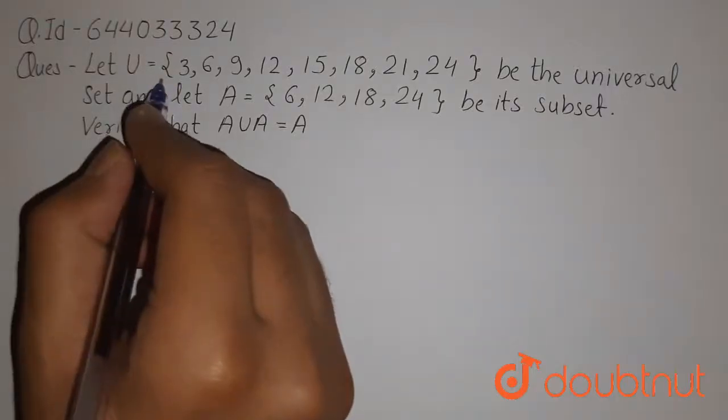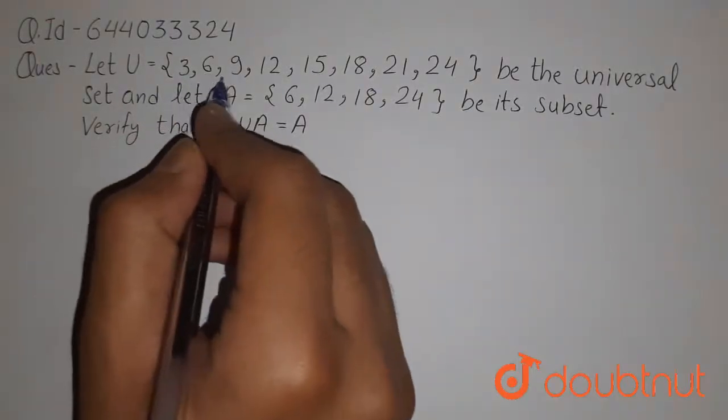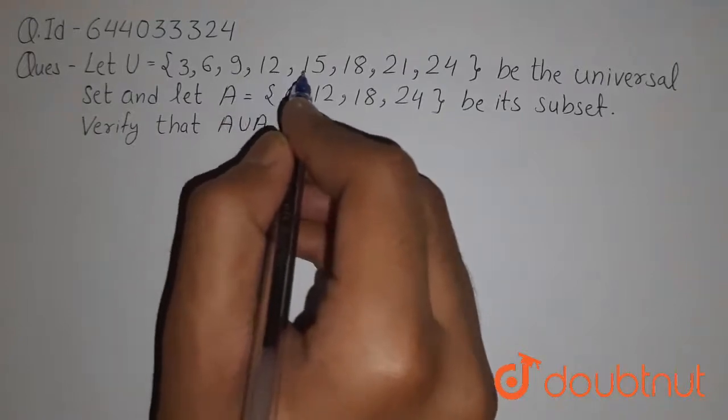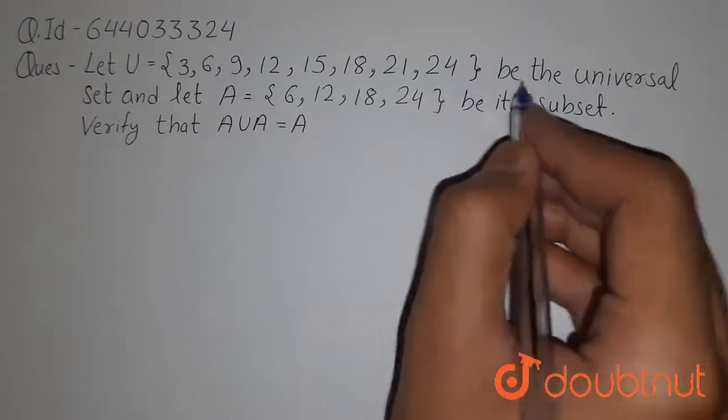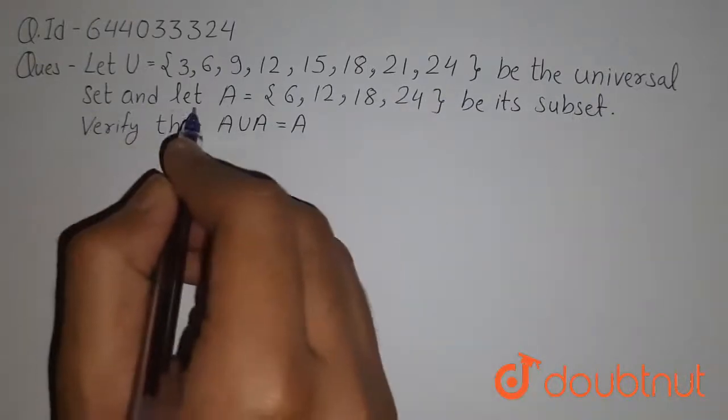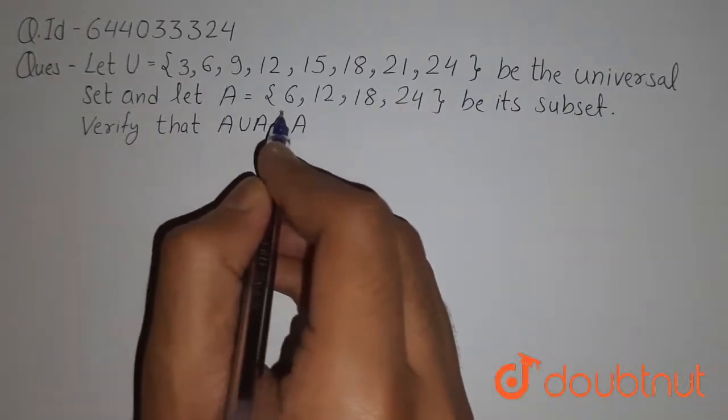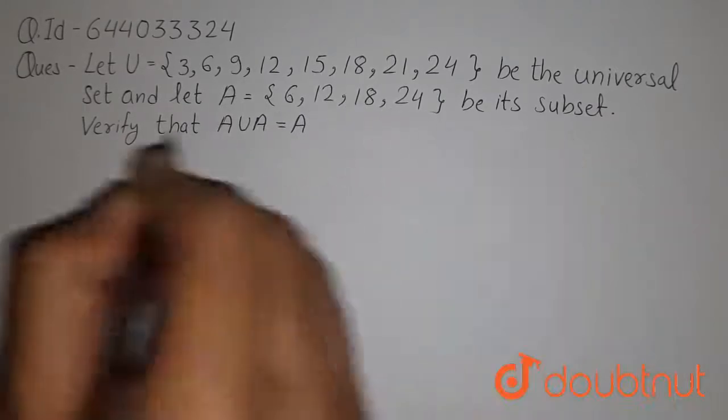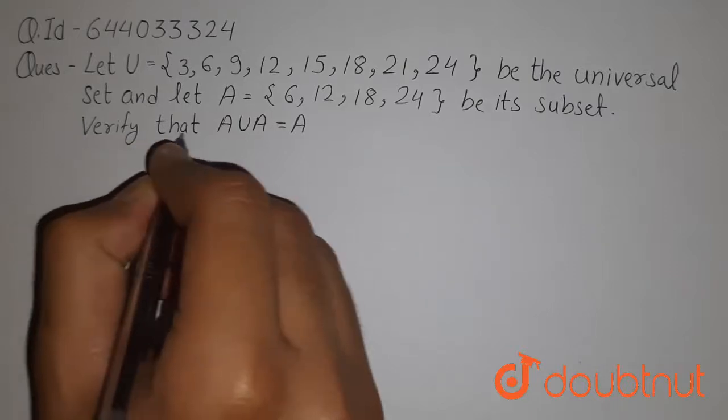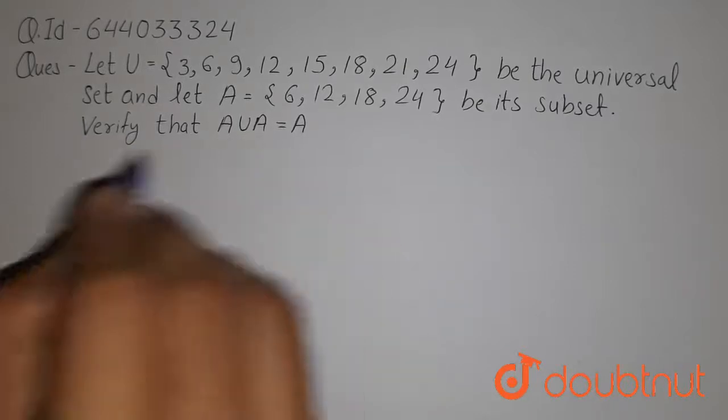Question is: Let U equals 3, 6, 9, 12, 15, 18, 21, 24 be the universal set and let A equals 6, 12, 18, 24 be its subset.